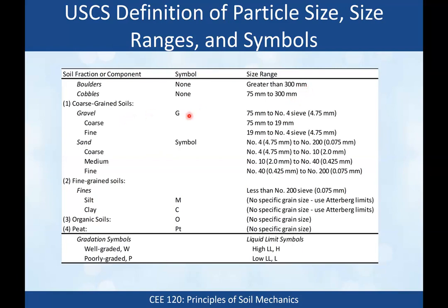For gravel, we go from 75 mm down to the number 4 sieve (4.75 mm). Coarse gravel is 19 to 75 mm; fine gravel is 4.75 to 19 mm. Then we get into sands, which are further graded into coarse, medium, and fine. Coarse sands are between the number 4 and number 10 sieve (about 2 to 4.75 mm); medium is number 10 to number 40; and fine sands are number 40 to the number 200 sieve.